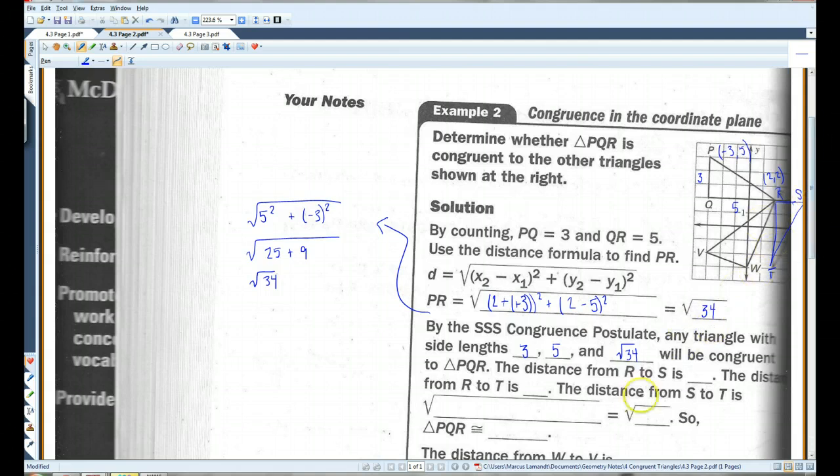If we just count, you'll see that it's 3. The distance from R to T, if you count, is 5.